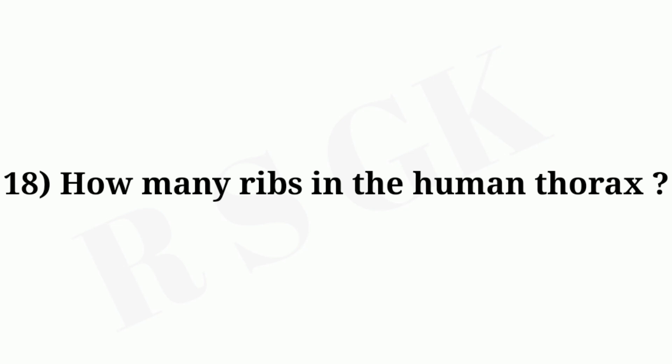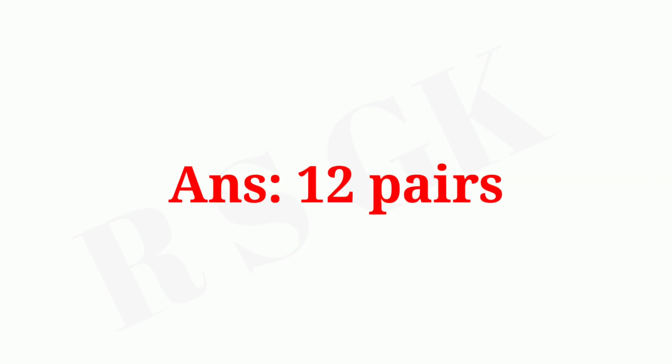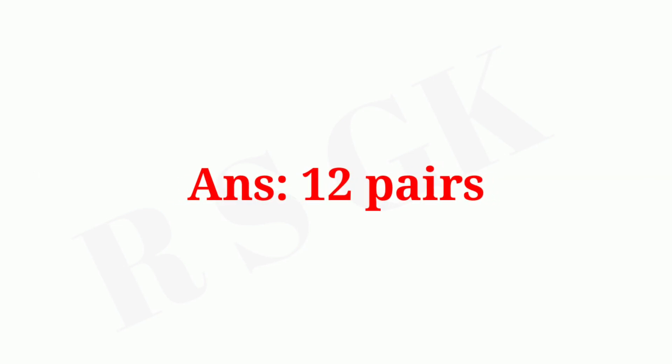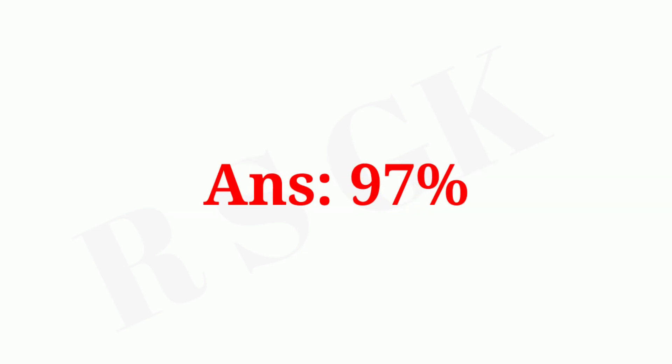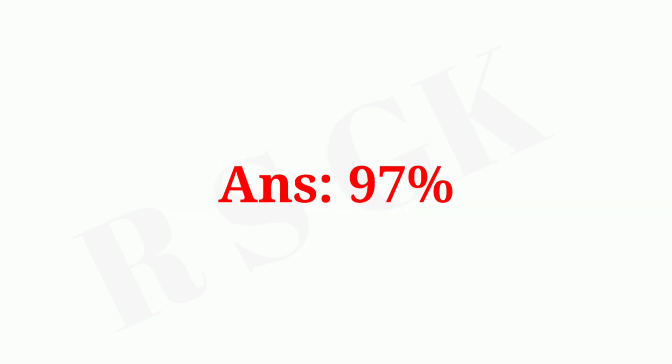Question number eighteen: how many ribs are in the human thorax? Answer: 12 pairs. Question number nineteen: what is the percentage of calcium stored in the bones? Answer: 97 percent.